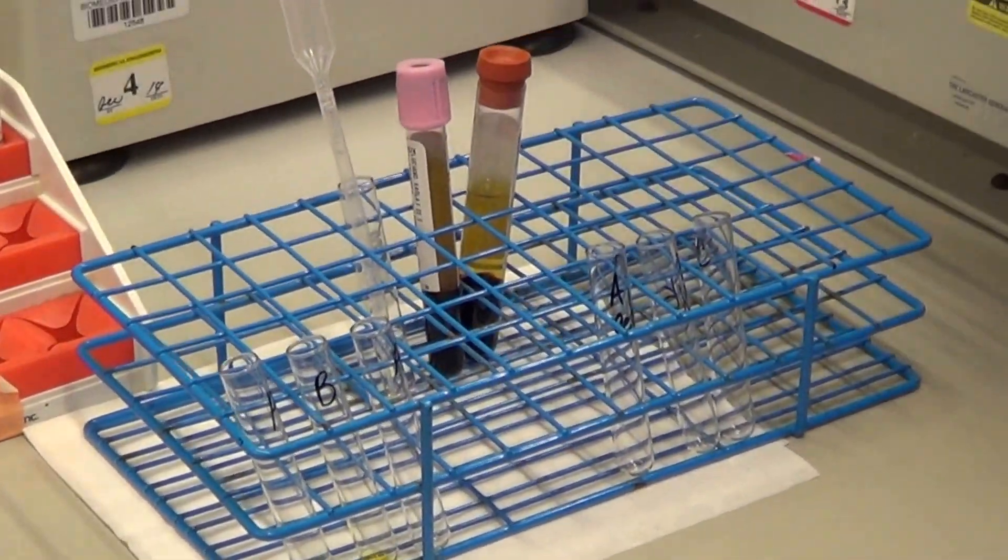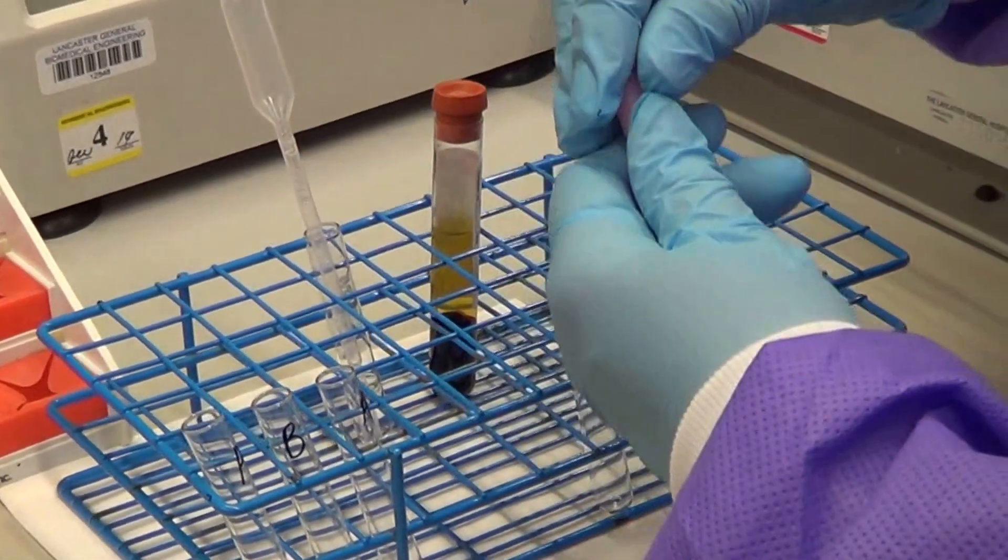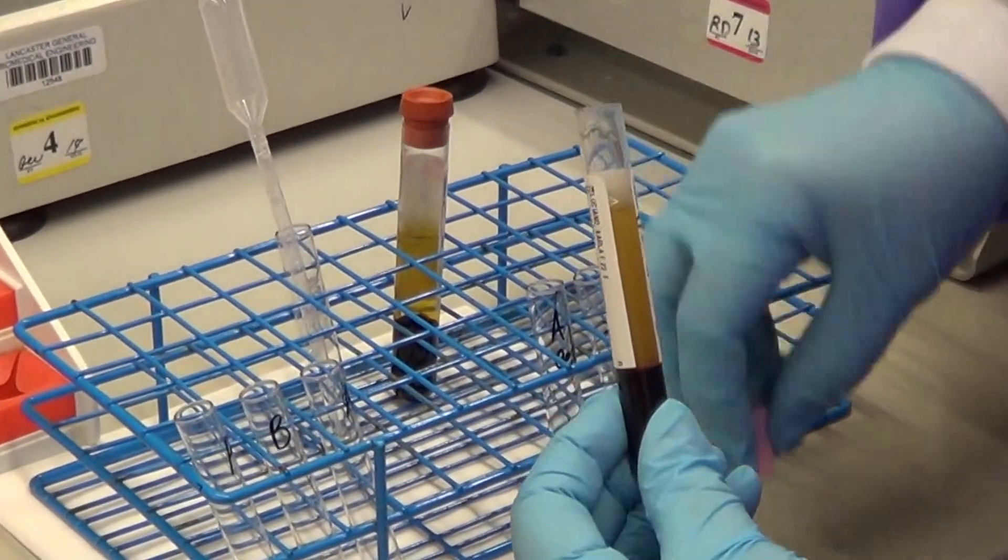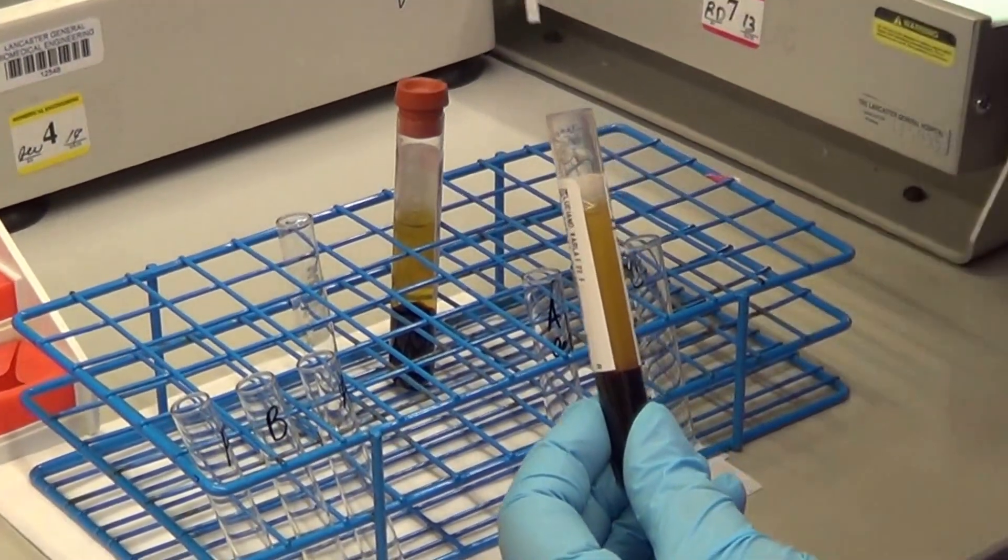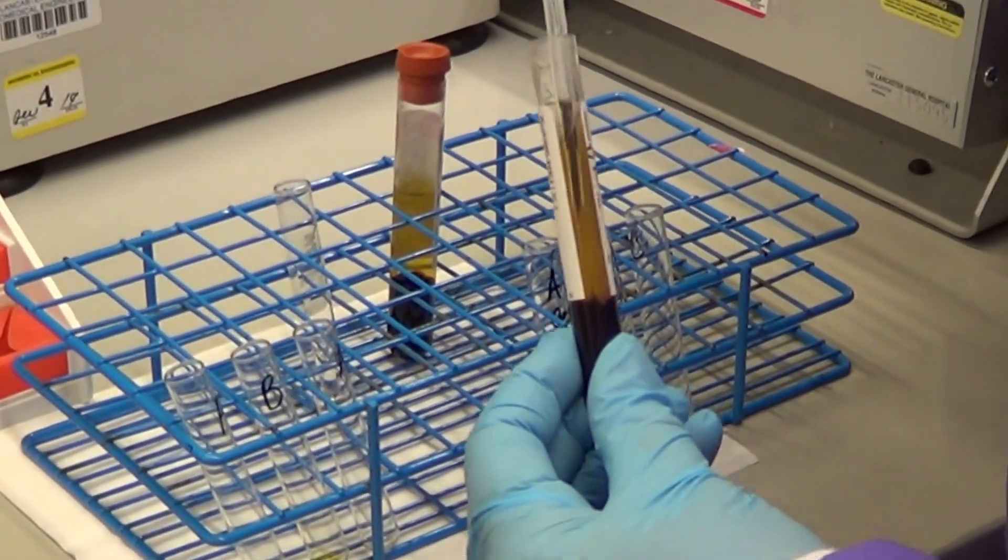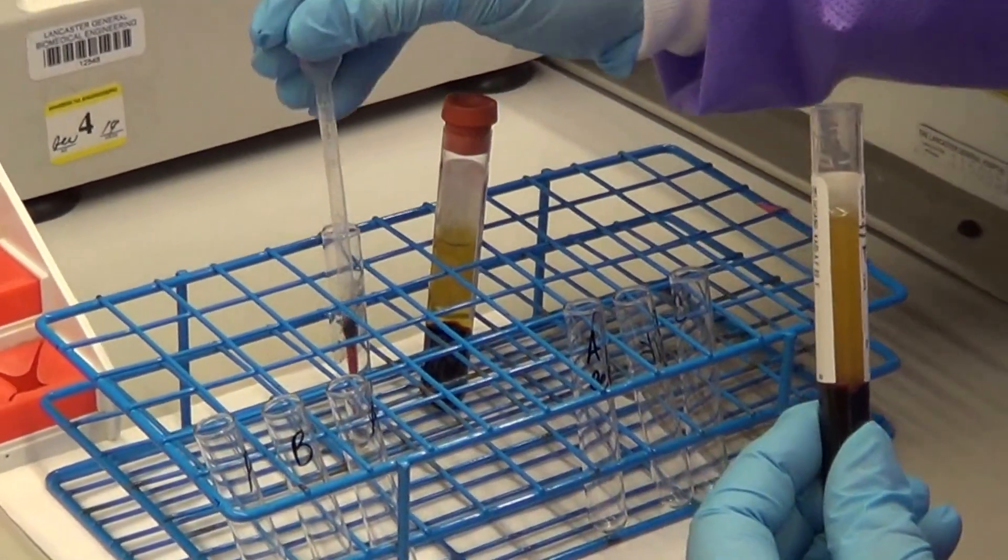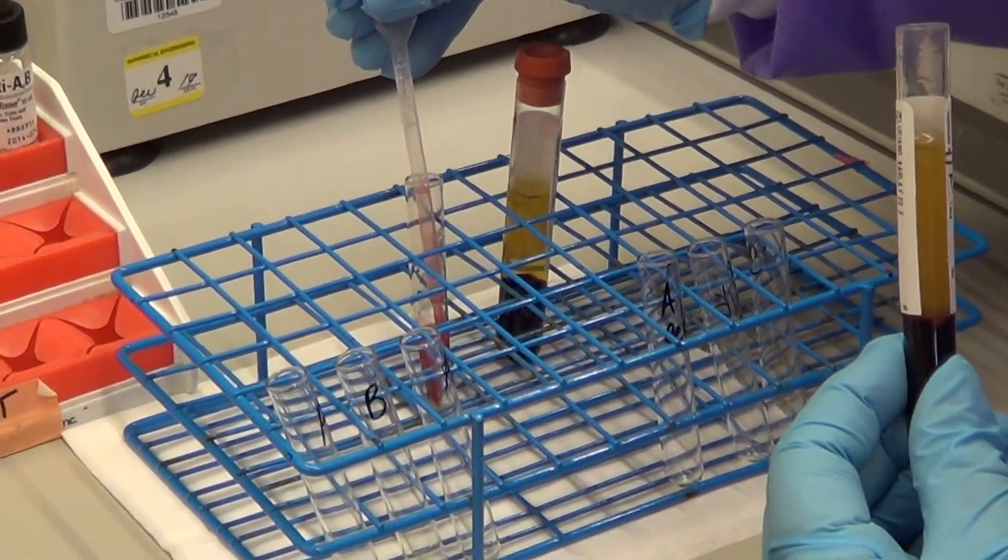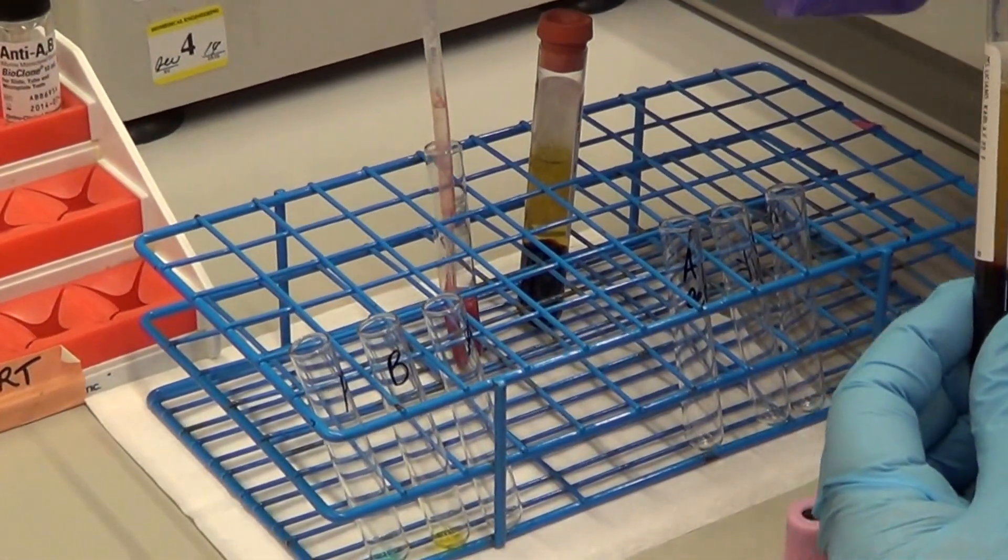The next step is to make your cell suspension from your patient sample. Take your EDTA sample, use a pipette to get red cells, and mix it in 0.9% saline to a 3-5% cell suspension.